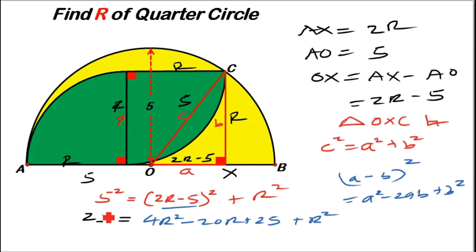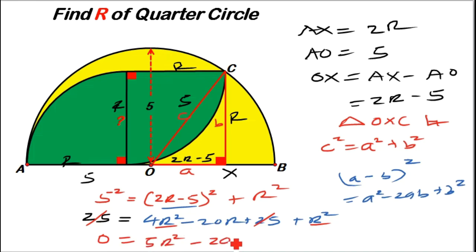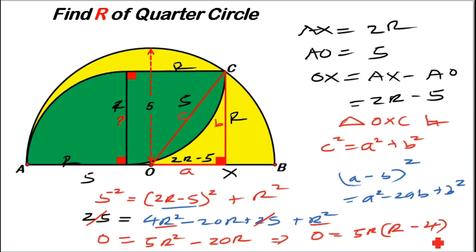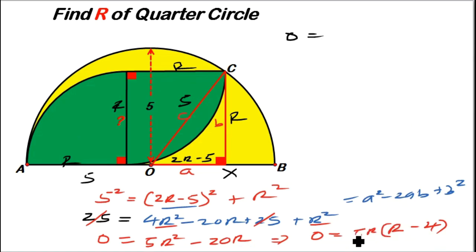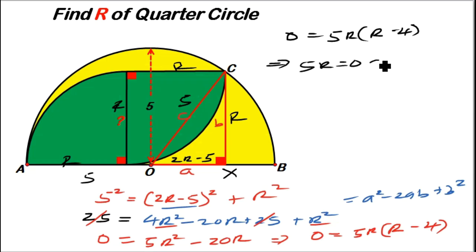Now 25 and 25 cancel on either side of the equation, leaving 0 equals 4r squared plus r squared minus 20r, which is 0 equals 5r squared minus 20r. R is a common factor, so factoring gives 0 equals 5r times (r minus 4).